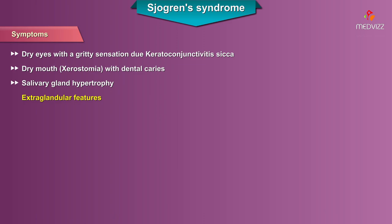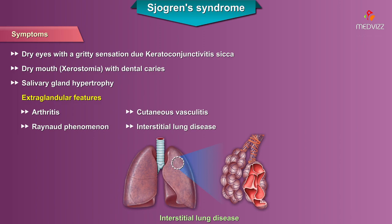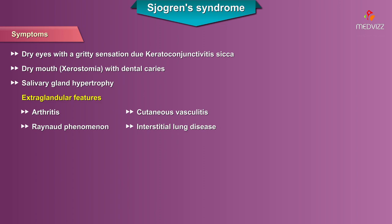Extraglandular features such as arthritis, Raynaud phenomenon, cutaneous vasculitis, and interstitial lung disease can all be present in a subset of patients with severe presentation or severe disease progression.